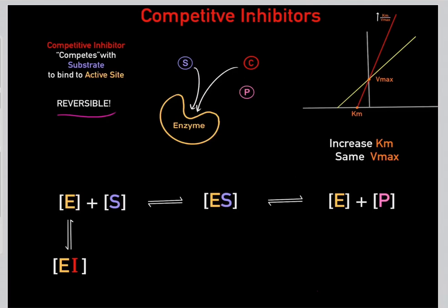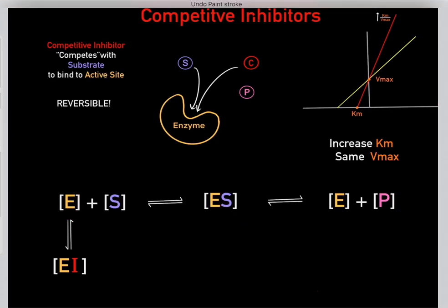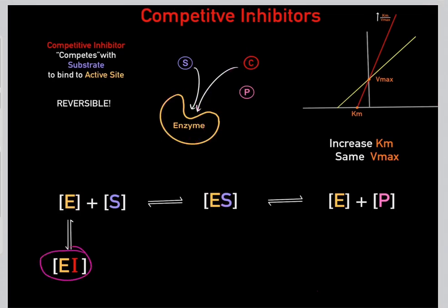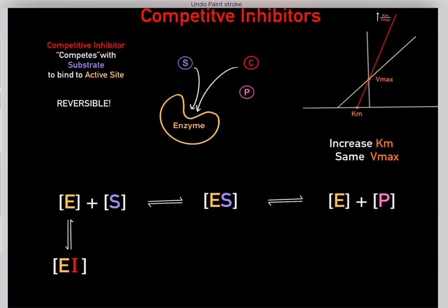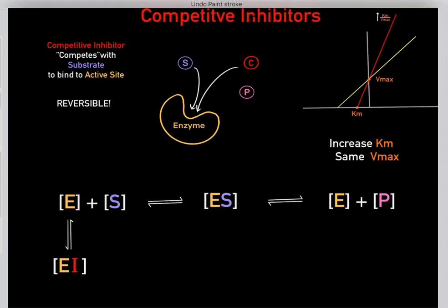The main idea with competitive inhibitors is they compete with the substrate for binding to the enzyme's active site, and it's reversible. Sometimes the competitive inhibitor blocks the enzyme, but sometimes it falls off, allowing the substrate to bind. In biochemistry diagrams, the competitive inhibitor binds to the enzyme forming the enzyme-competitive inhibitor complex, but it's temporary — eventually the inhibitor falls off, forming the free enzyme, which can then react with the substrate.